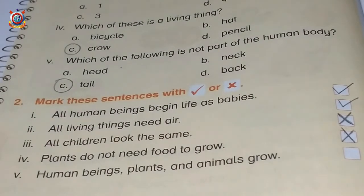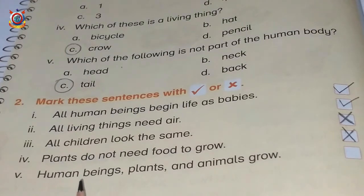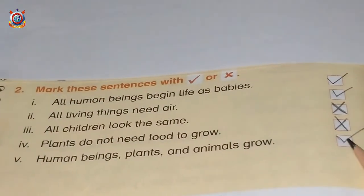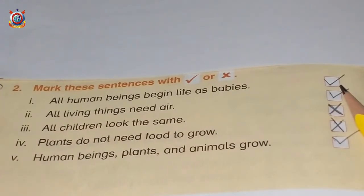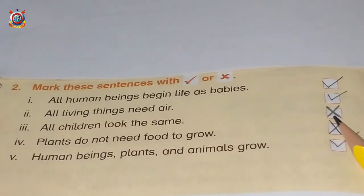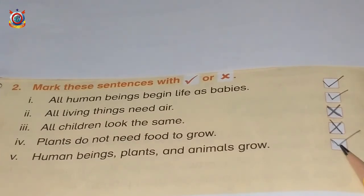Number 5: Human beings, plants and animals grow. Yes, because human beings, plants and animals are living things, and living things grow. This answer is correct — we will put a tick there. To recap: 1 — correct, 2 — correct, 3 — wrong, 4 — wrong, 5 — correct.